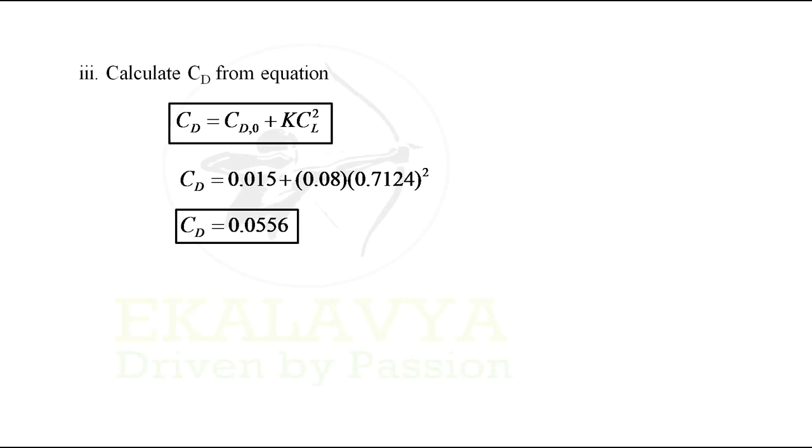Next, the third step will be to calculate CD from drag polar equation. So CD is given by CD0 + CDi. CDi can also be replaced as k·CL². Now substituting the values of CD0 as 0.015, k as 0.08, CL as 0.7124, and simplifying for CD, we get CD as 0.0556.